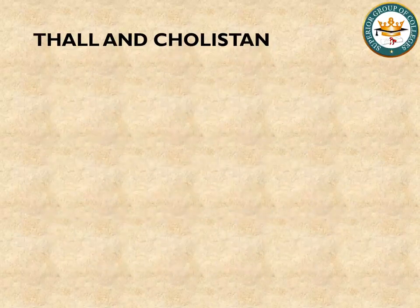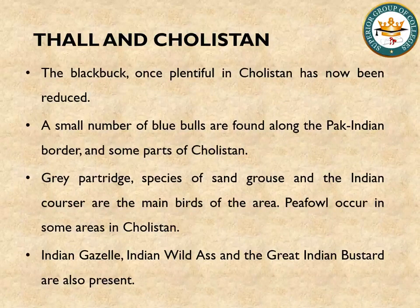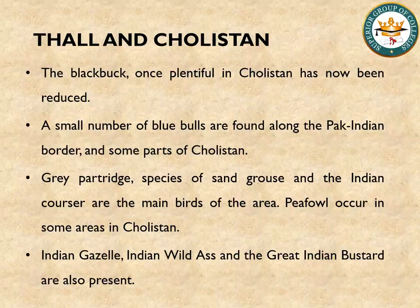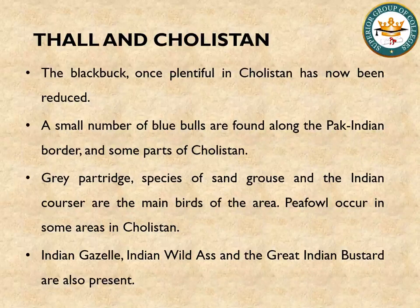Talking about Thal and Cholistan: Black Bucks were once plentiful here, especially in Cholistan, but their numbers have also reduced. Blue bulls are present on the Pakistan-India border, and a small number of blue bulls are found in Cholistan Desert. For bird species, we have grey partridge, sand grouse, Indian cormorant, and peafowl present in Cholistan. Indian wild ass and Great Indian Bustard are also present.